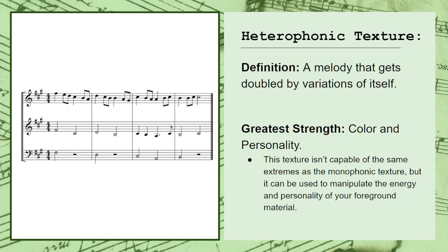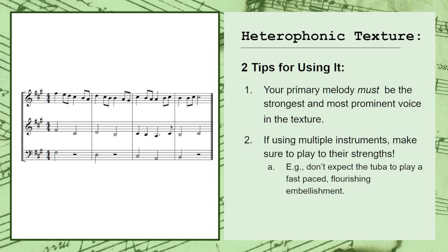When using this texture, it can be helpful to keep in mind two useful tips. The first is that your primary melody must be the strongest and most prominent voice in the texture. Just because they're all based on the same basic idea doesn't mean that you can forget about the three pillars of separation, focus, and balance. The second is that when you assign the variations to different instruments, make sure that you play to their strengths. You don't want to give a fast-paced, flourishing embellishment to a less-than-agile instrument like the bass or tuba.